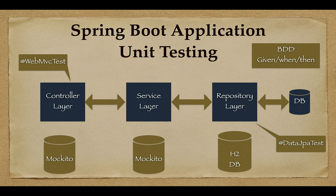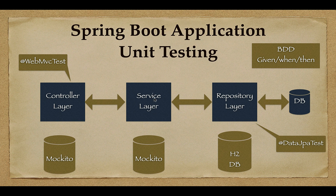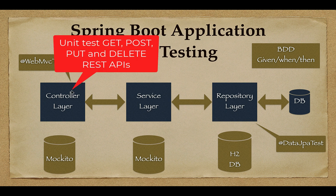Once we complete unit testing repository layer components, we'll move to unit testing service layer components. The service layer depends on the repository layer, so we have to mock the repository layer component. To do this we're going to use the Mockito framework, which is a well-known Java library for mocking objects. You will learn how to use Mockito framework, its annotations, and how to stub method calls.